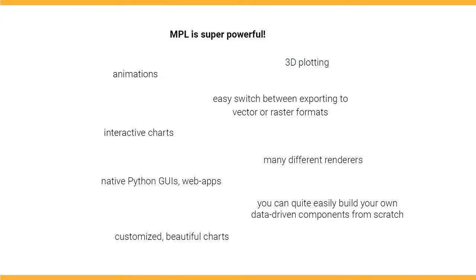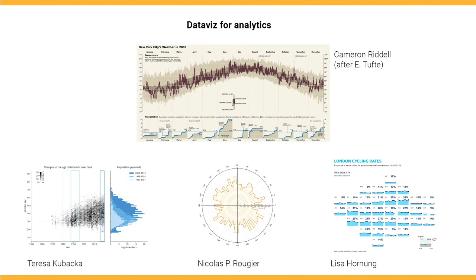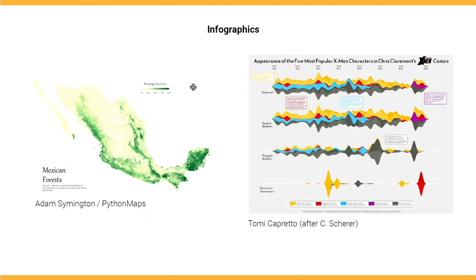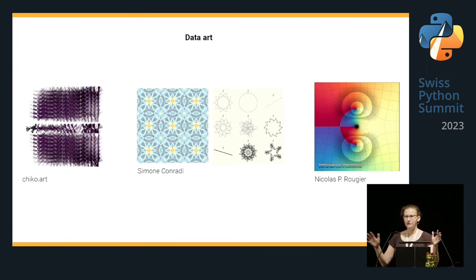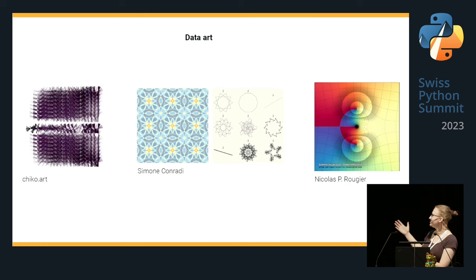It can do a lot out of the box. It can do 3D plotting, animations, interactive charts. It can be embedded in graphical user interfaces in many different systems. It can also create beautiful charts. I have some examples to convince you of that. You can create really cool charts for typically data analytics applications or more scientific applications. But you can also create very impressive infographics. This is also created with Matplotlib. And if you are more into creative coding and artistic feelings, then you can also do data art with Matplotlib directly.